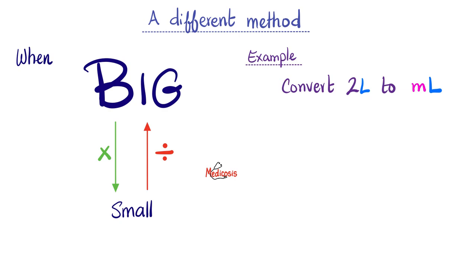There is another rule of thumb that helps a lot. When you're converting from a big quantity to a smaller one, you multiply. For example, when you convert from two liters to mls, which one is bigger? Of course, the liter is bigger. So I'm converting from big to small. And when you convert from big to small, you have to multiply. I know that one liter contains a thousand mls. So I simply multiply the two by one thousand to get the final answer of two thousand mls.